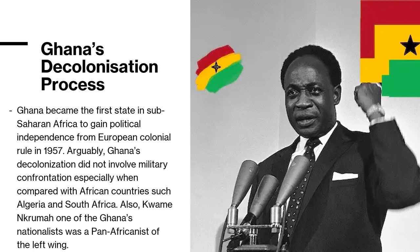Now we are going to look at Ghana's decolonization process. Ghana became the first state in Sub-Saharan Africa to gain political independence from European colonial rule in 1957. Ghana's decolonization did not involve military confrontation, especially when compared with African countries such as Algeria and South Africa. Kwame Nkrumah, one of Ghana's nationalists, was a Pan-Africanist of the left wing.